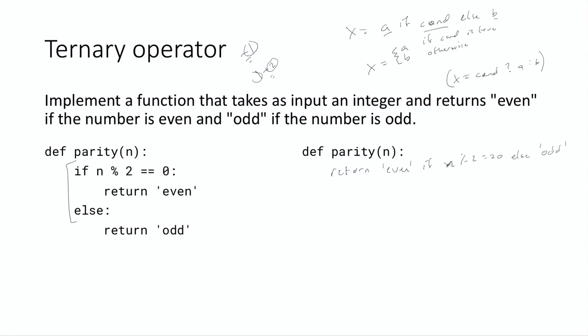And the last thing I'll say is that you can actually chain these conditions together. You can write something like a if condition one, else b if condition two, else c. And again, this is super straightforward. The idea is that if condition one is true, we'll have a, if condition one is false and condition two is true, we'll get b. And if both conditions are false, we'll get c.